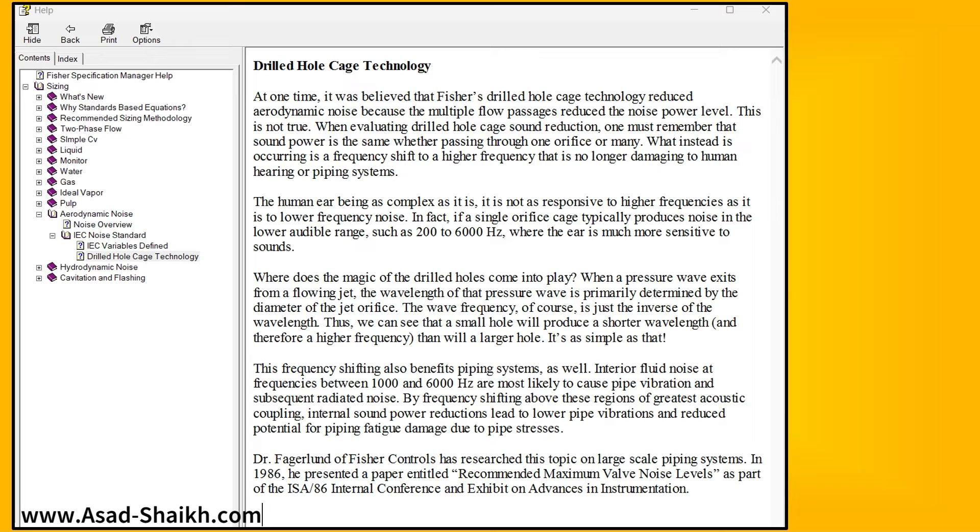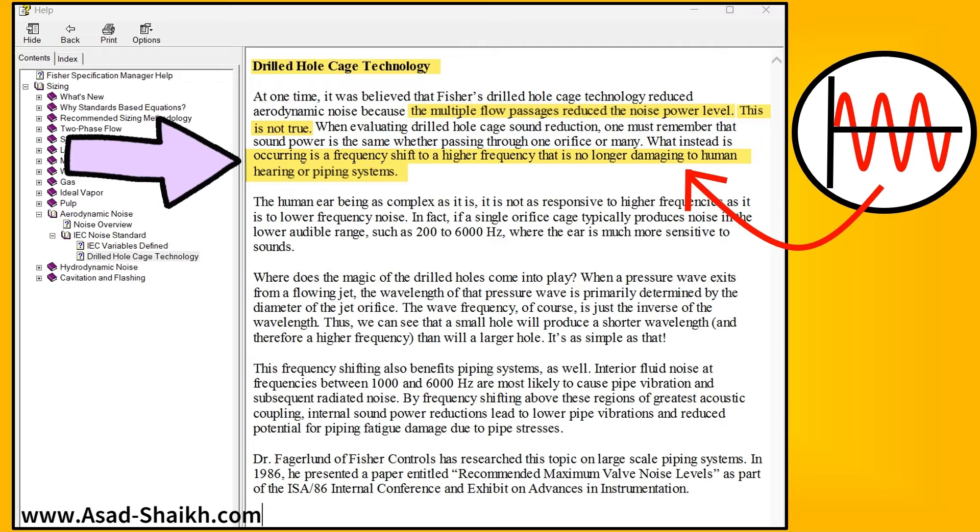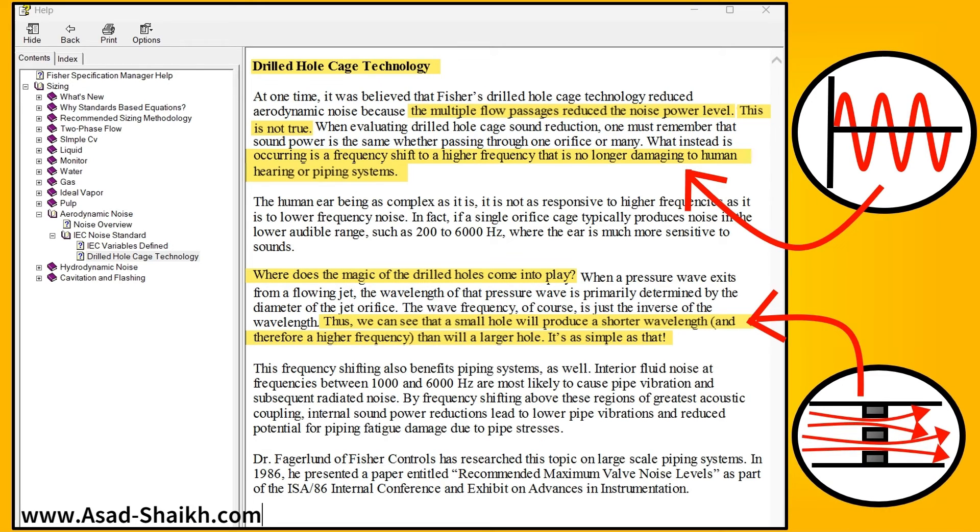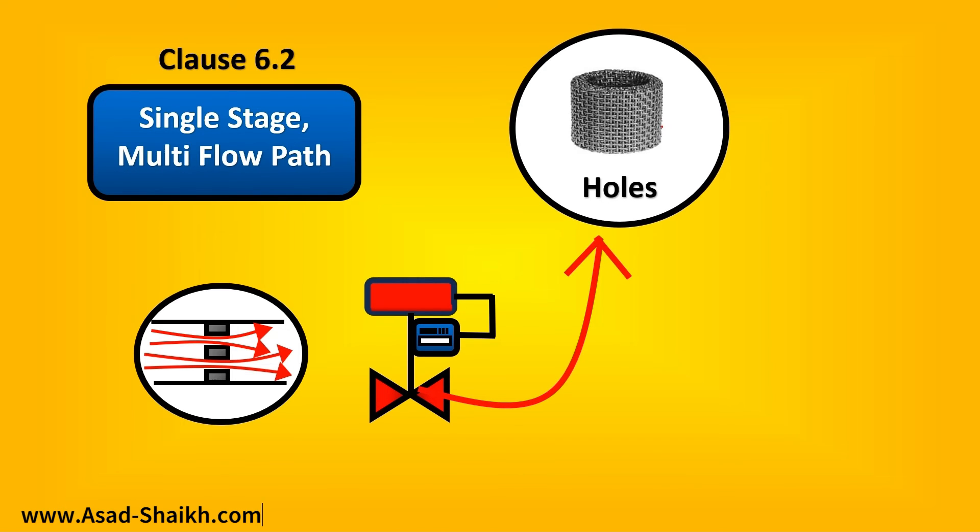This is beautifully explained in Fisher sizing software, where they have explained the drilled hole cage technology. They said one time it was believed that multiple flows reduce the noise power level. This is not true. Basically, what happens is there is a frequency shift to a higher frequency that is no longer damaging to the human ear or the piping system. Now where does the magic of this hole come into play? You can see that with a very small hole we can produce a shorter wavelength and therefore a higher frequency than with a larger hole. This benefits because the human ear can perceive noise less at higher frequencies, and at the same time the piping systems can also be protected. To summarize, 6.2 clause is basically single stage but multiple flow paths. This is incorporated in the trim of the valve. You might see valves with a lot of holes in the trims—this is basically trying to use this clause to reduce the noise.